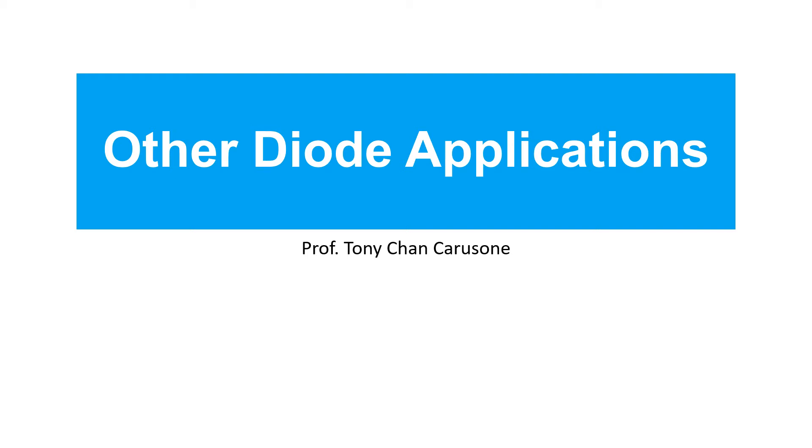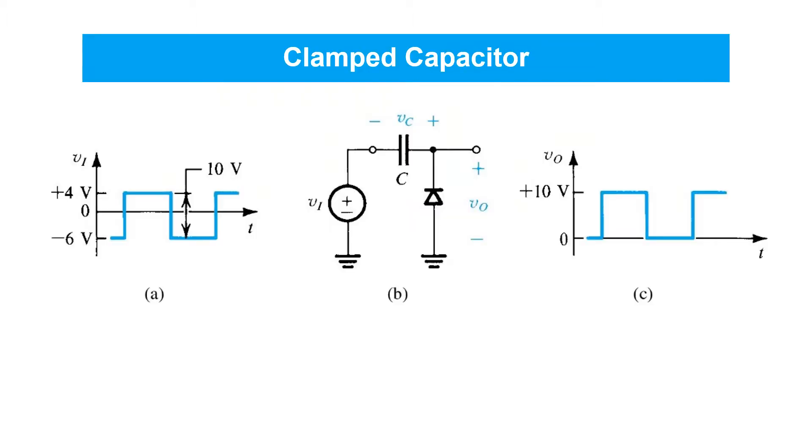In this video we'll see a few other interesting applications of diodes. Let's start with the simple clamp capacitor circuit shown here in figure b. The circuit looks very much like a peak detector except that the output vo is being taken as the voltage across the diode rather than the voltage on the capacitor vc.